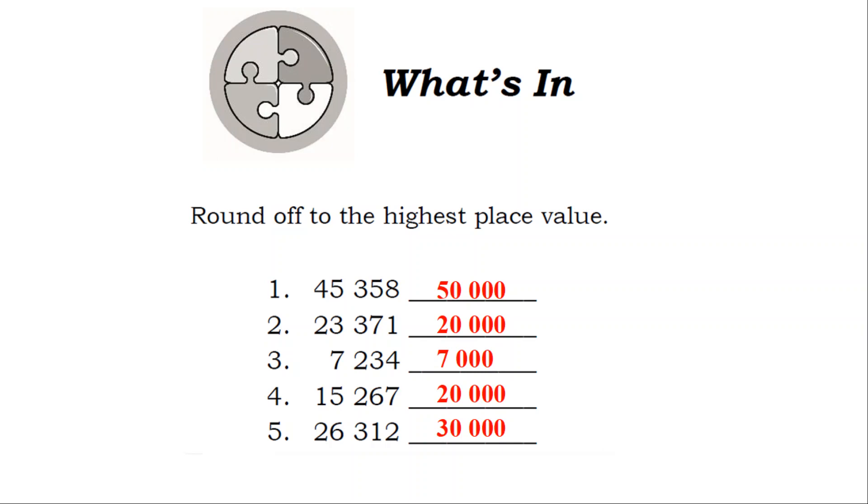3. 7,234 rounded off will be 7,000. 4. 15,267 rounded off will be 20,000. 5. 26,312 rounded off will be 30,000.